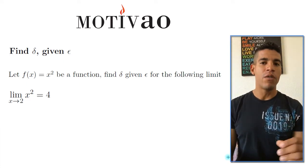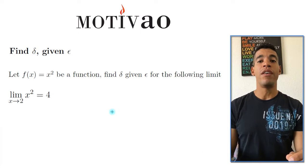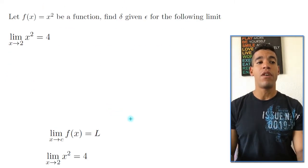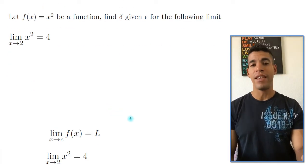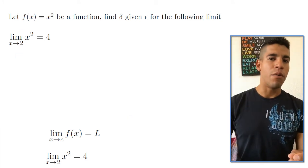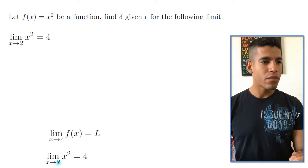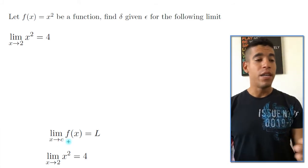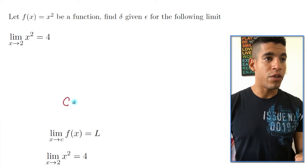So just like the previous video, the first thing we do is find the values of the definition. So in this case, c, f of x, and L. So by association, c is equal to the number that's to the right. So it's 2 in this case. So c is equal to 2.